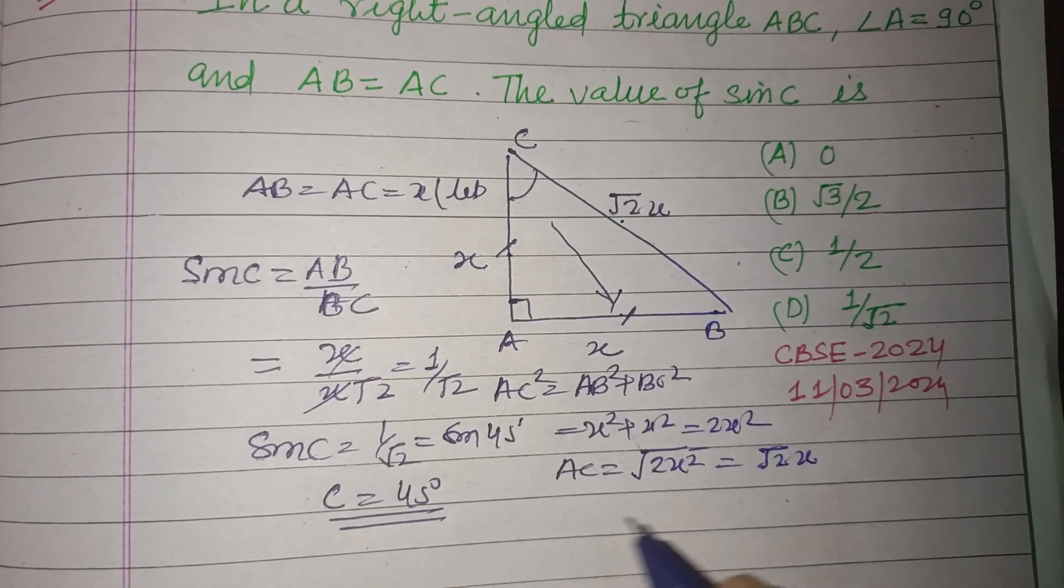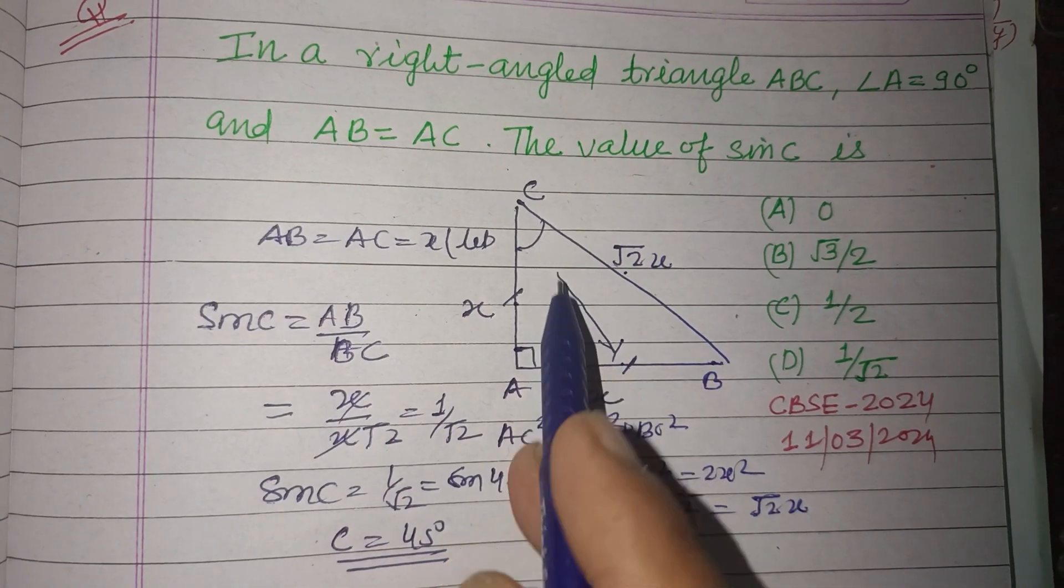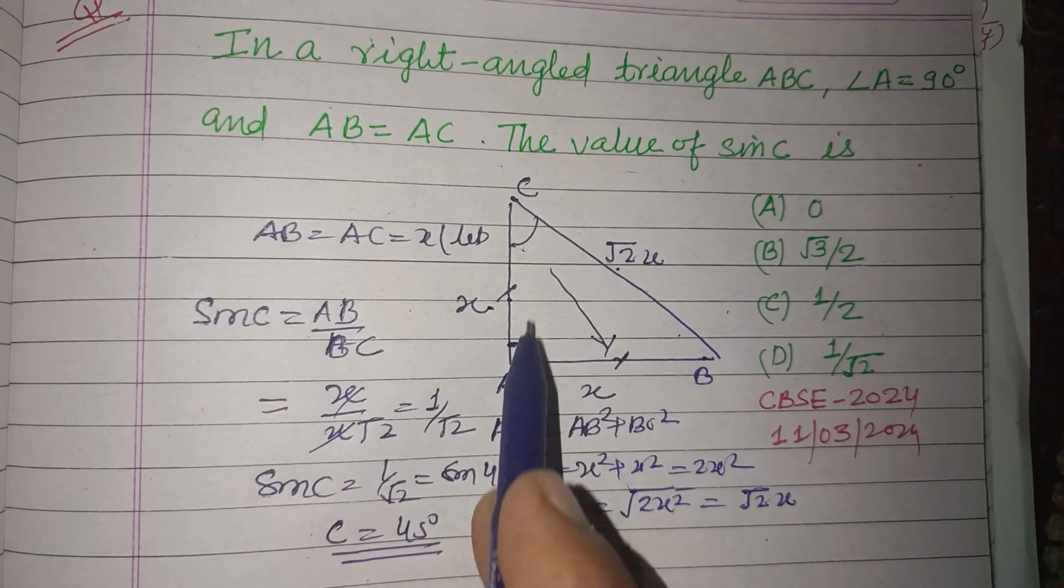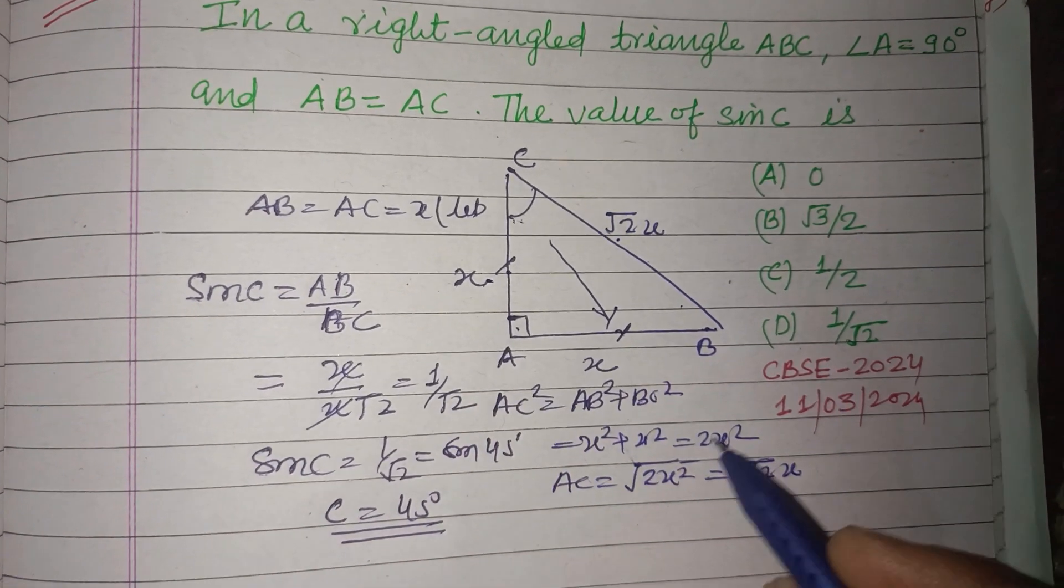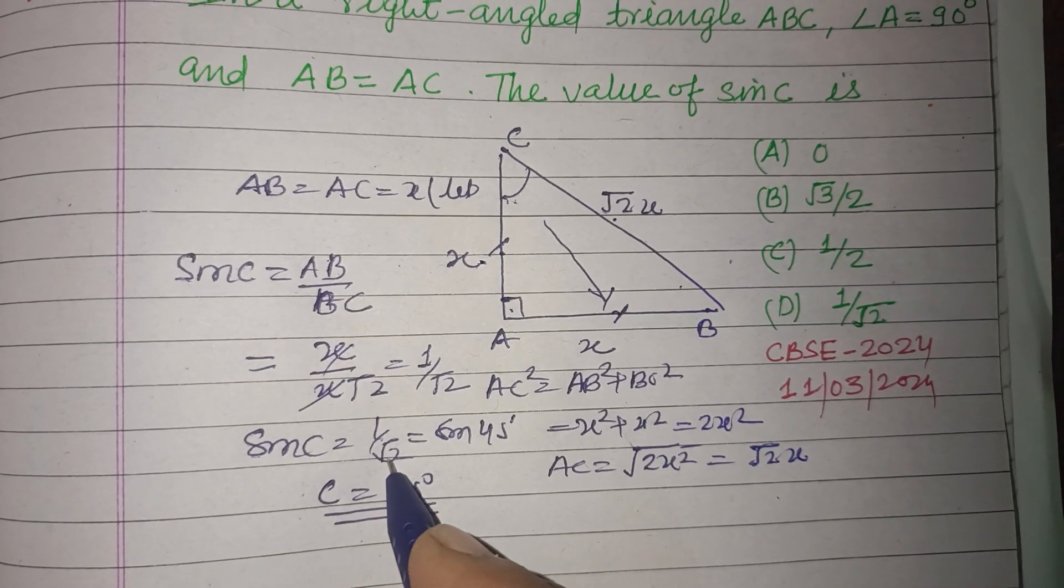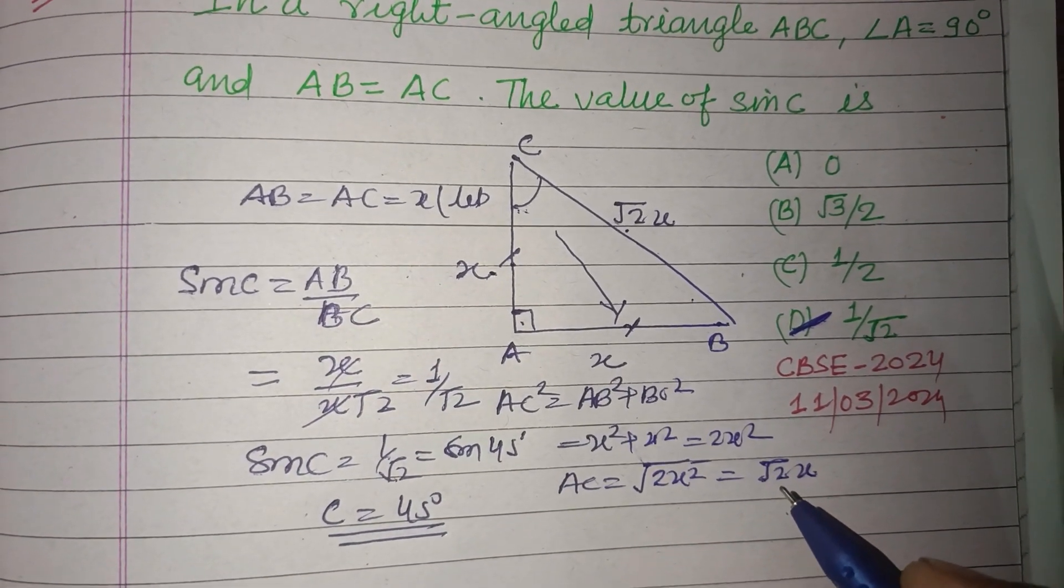C equals 45°. Or generally, because x and x are the same, this is 90°, so this is 45°, this is 45°. So sine C equals 1/√2, which is option D. So D is the correct answer.